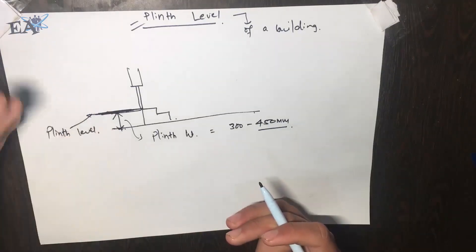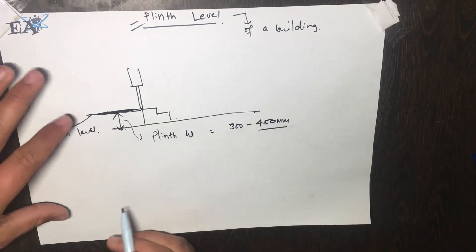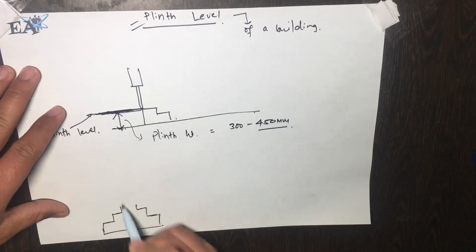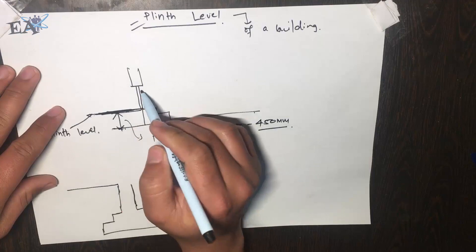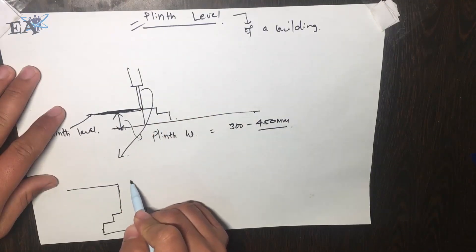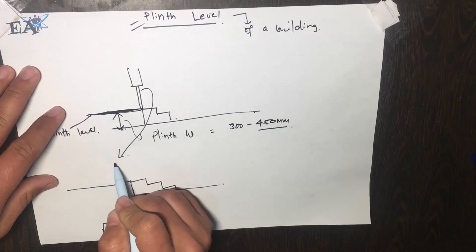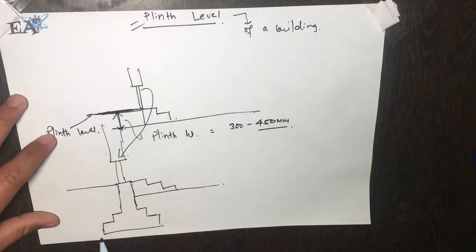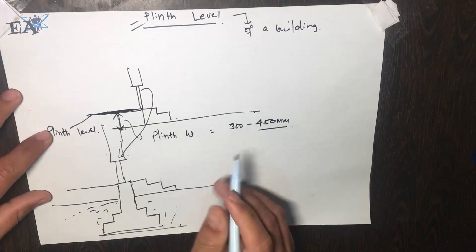There are two cases to consider. First, your structure might be a wall structure, and second, it might be a frame structure. In a wall structure, you have a footing, then the wall, and your floor. The ground is at a certain level, you have steps to go inside, and there's your door. This entire region below the ground floor is called backfill.